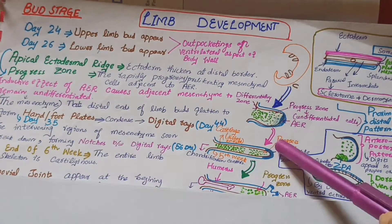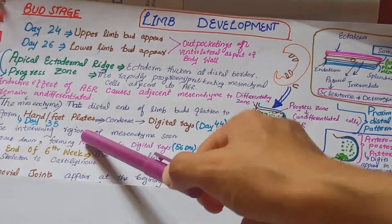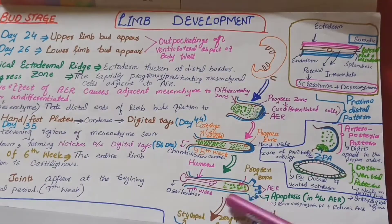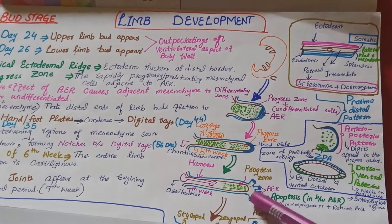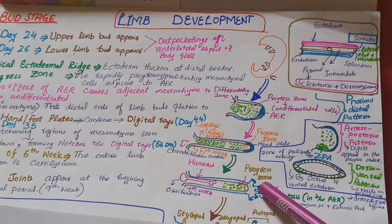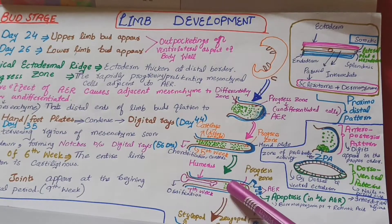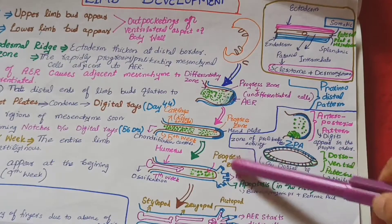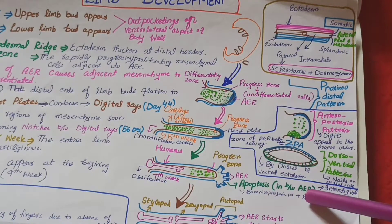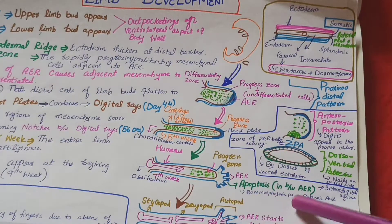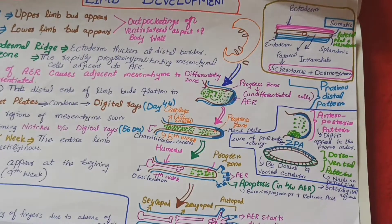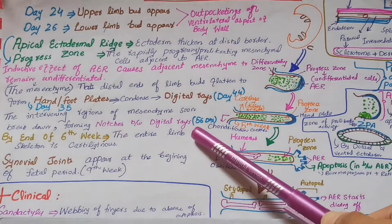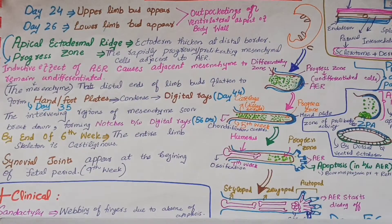Hand plates are formed at day 35, and these condense to form digital rays at day 44. The progress zone shifts toward the distal ends adjacent to the AER. The more proximal region has differentiated into bony structures with various ossification centers. Meanwhile, the most important step occurring is apoptosis in the interdigital regions, due to bone morphogenic proteins and retinoic acid. Intervening regions of mesenchyme break down, forming notches between the digital rays at day 56.